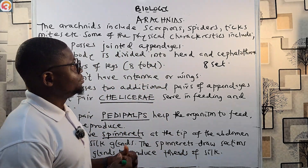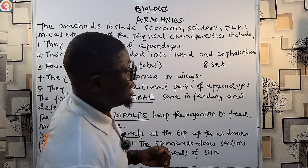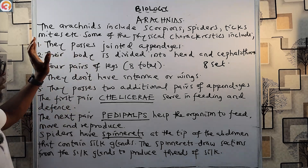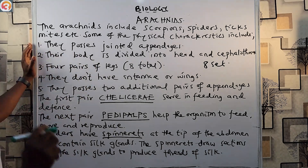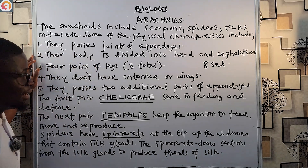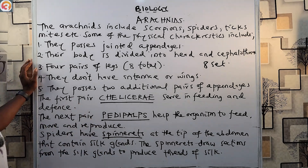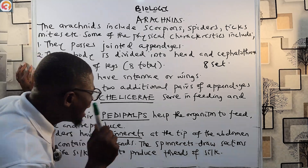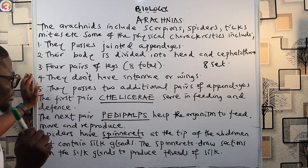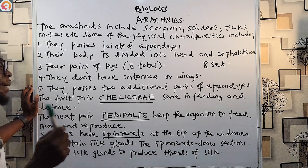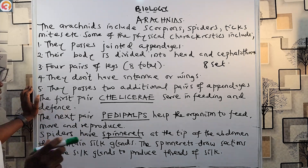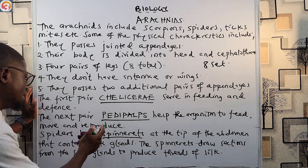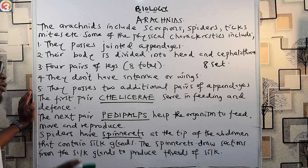So to recap: arachnids include scorpions, spiders, ticks, and mites. They have jointed appendages, their body is divided into the head and cephalothorax, and they have four pairs of legs — eight in total. They do not have antennae. They possess two additional pairs of appendages: the chelicerae, which help in feeding and defense, and the pedipalps, which help the organism to feed, move, and reproduce.